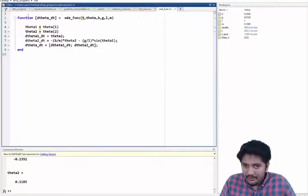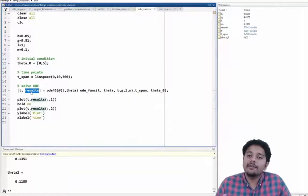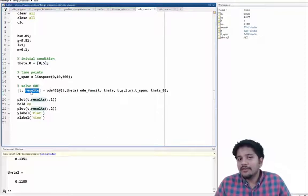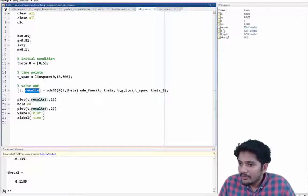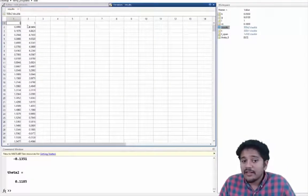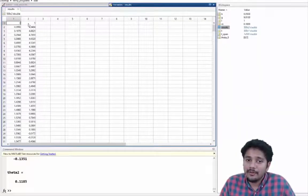And then finally this function right here is going to give me the time, the integration time and the results. Now since we are solving two ODEs the results will be a column vector and to be specific it has two columns. So if I open up my results, you can see that there are two columns. The first column refers to my displacement and the second column refers to the velocity.